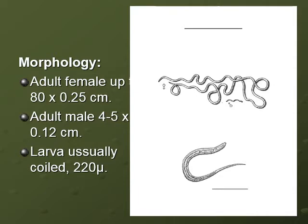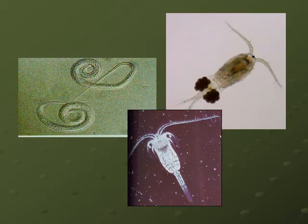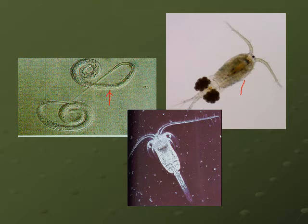The adult female is up to 80 centimeters long by one quarter of a centimeter in breadth. The adult male is about four to five centimeters by 1.2 millimeters. The larva is usually coiled or making a U-shape and is about 220 micrometers in length. Here we have the Cyclops, which is the intermediate host of Dracunculus, and also a slide with villi of Dracunculus medinensis coming from the female.